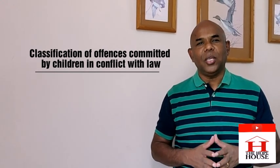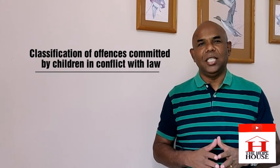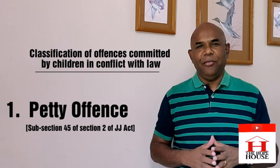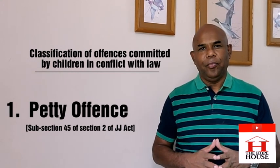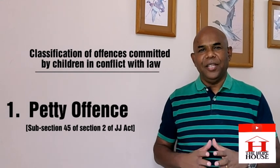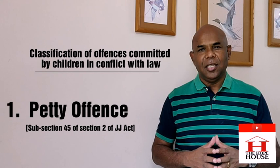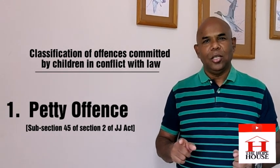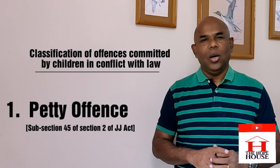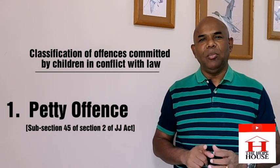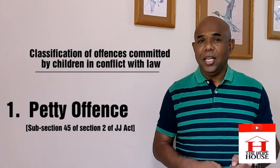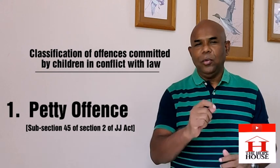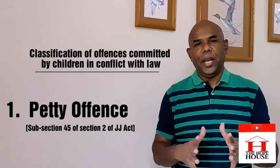When you look at children in conflict with the law, what kinds of offenses are we talking about? Number one offense is called a petty offense — that means small offenses. The definition of a petty offense under the JJ Act means any offense that, if committed by an adult, subjects that adult under the Indian Penal Code or any other Indian law to imprisonment of up to three years. If that similar kind of crime is committed by a child, it is called a petty offense.